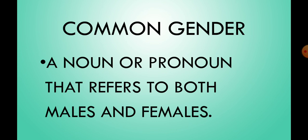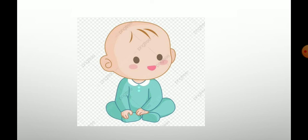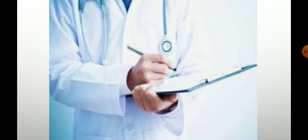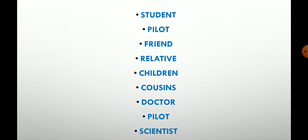Let us study this through examples. Baby — you cannot find out whether this baby is a he or a she. It is a common word used for a baby whether it is female or male. Doctor — this doctor can be either a male or a female. Some more examples: student, pilot, friend, relative, children, cousins, doctor, scientist. These words can refer to both male and female, that is why it is called common gender.